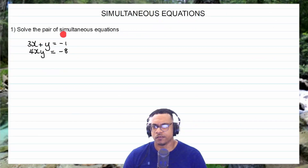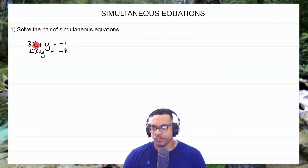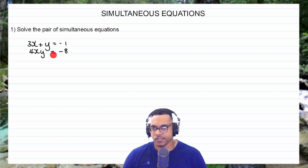Here we have to solve the pair of simultaneous equations: 3x plus y is equal to negative 1, and 4xy is equal to negative 8.